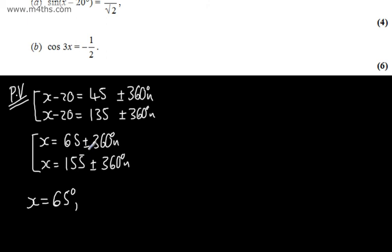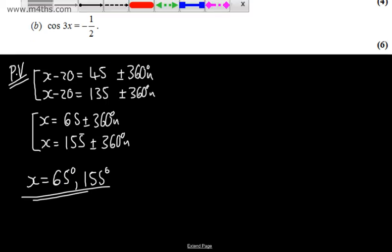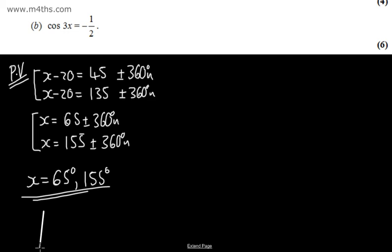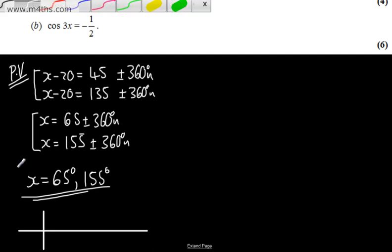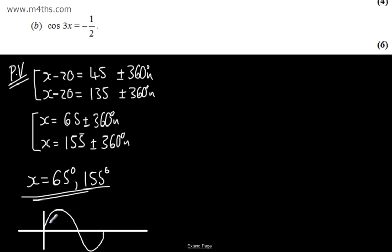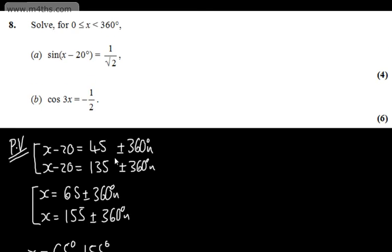For the second equation, adding or subtracting multiples of 360 takes us outside the interval, so we get x = 155 degrees. I've used the symmetry of the sine curve: if we have some value theta on the sine curve, then by symmetry we also have 180 minus theta, giving two solutions in the interval.